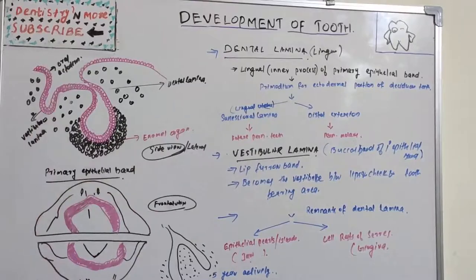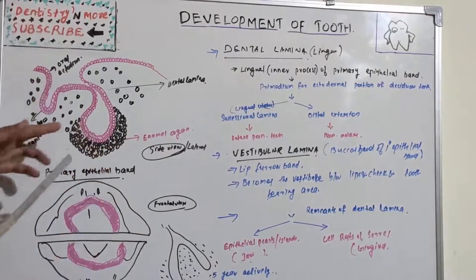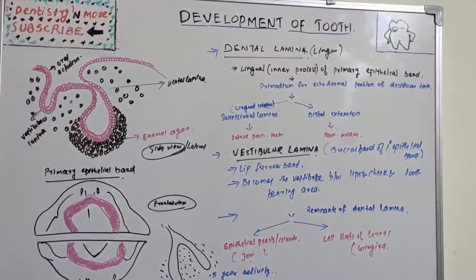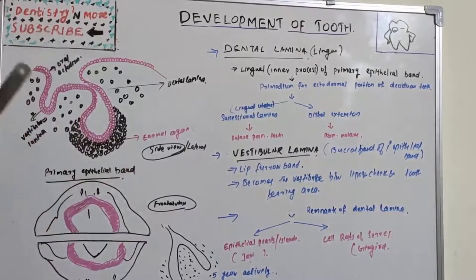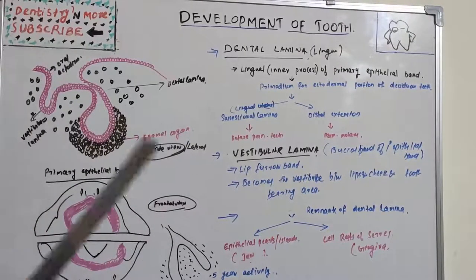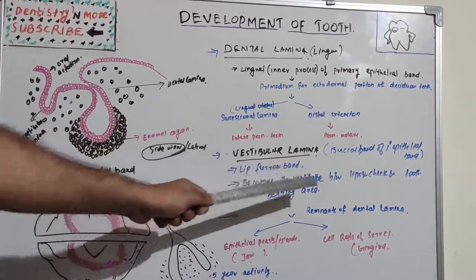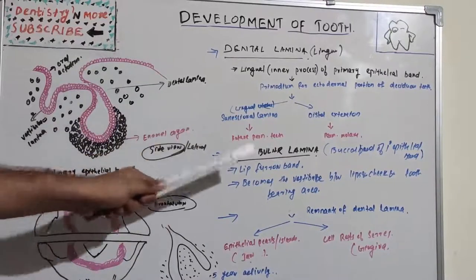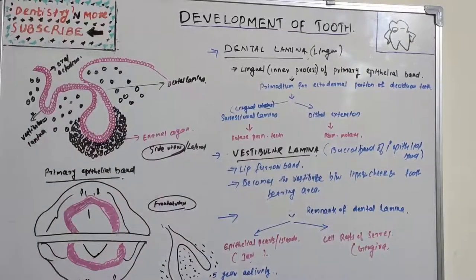Regarding the vestibular lamina — also known as the lip furrow band — it is the buccal portion of the primary epithelial band. You can distinguish the vestibular lamina and dental lamina in the lateral view: the vestibular lamina is on the buccal side and the dental lamina is on the lingual side. The vestibular lamina gives rise to the vestibule — the space between the lips and cheeks and the tooth-bearing alveolar bone. It becomes the lip furrow band between the alveolar bone and the lips and cheeks.